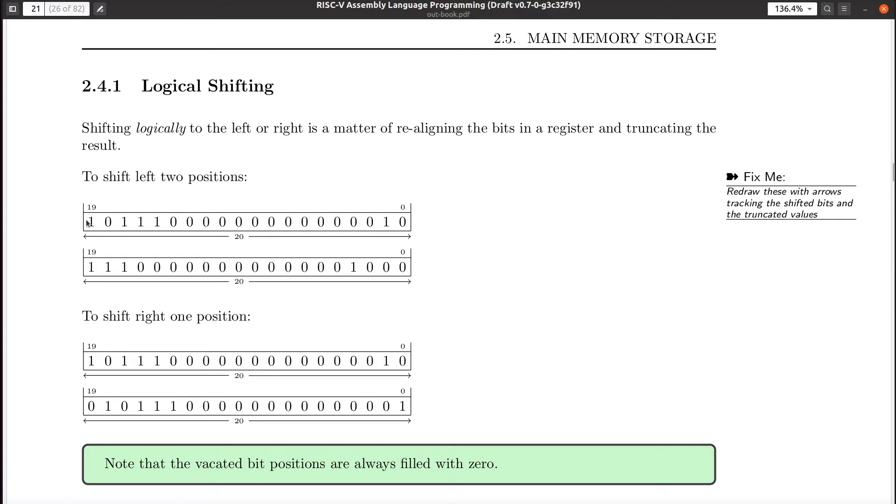If I have a value, this is a 20-bit binary number, for the sake of discussion, and I want to shift it left two bits. Well, all you need to do is move each one of them to the left too. So this one here ends up moving over two bits and ends up in there, and all these zeros get moved over as well.